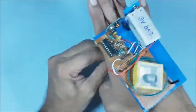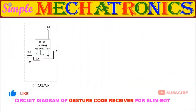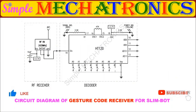Check that the ball in the sensor is moving with your palm movement. There is no change in the receiver circuit and slim bot.